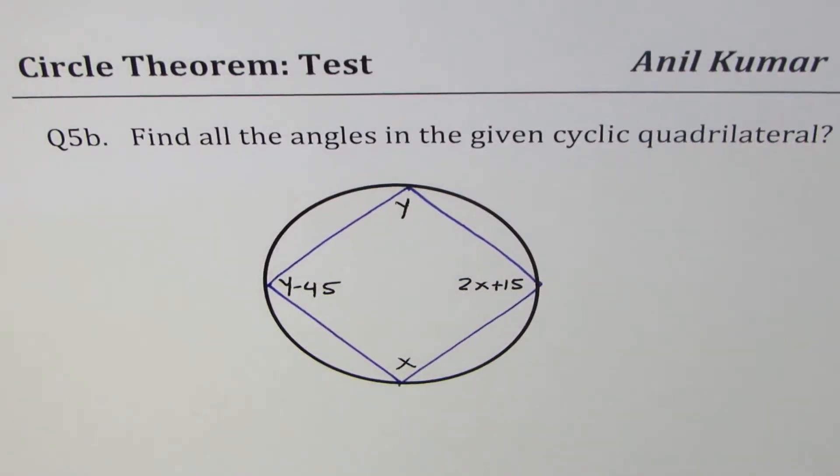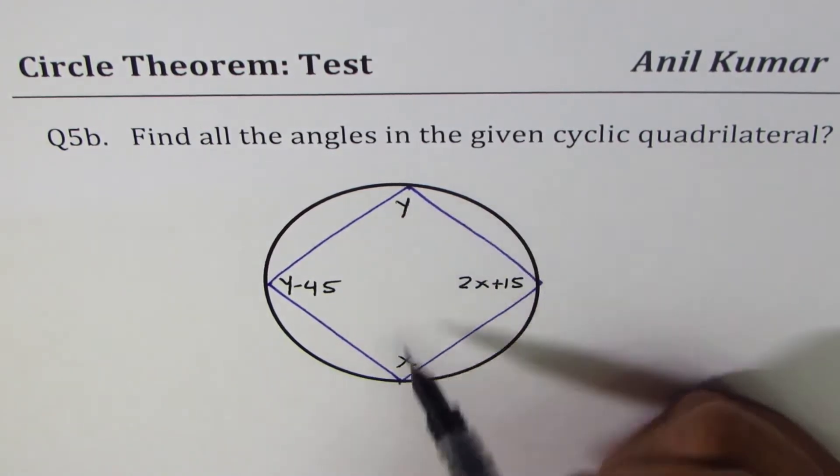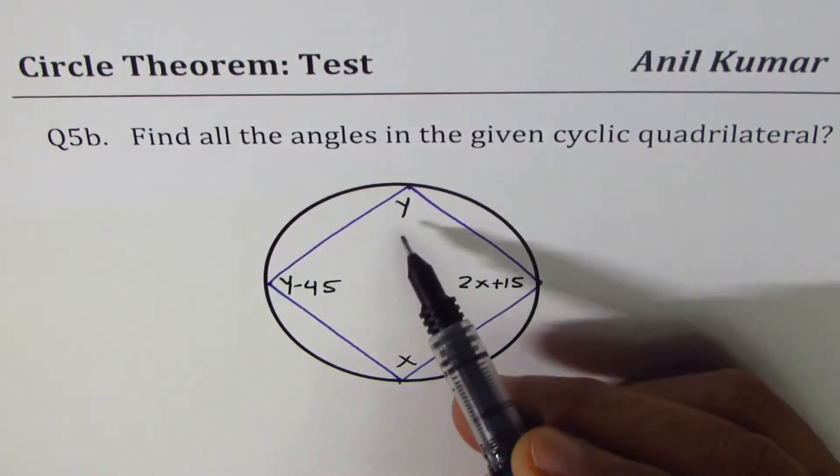I'm Anil Kumar and here is question number 5b based on rules we have learned in this unit circle theorem. Question is find all the angles in the given cyclic quadrilateral.